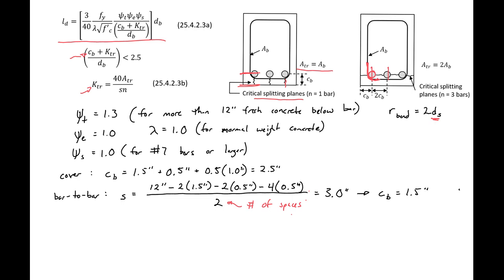CB is taken as the minimum of our cover CB and our bar-to-bar CB. The bar-to-bar CB at 1.5 inches is smaller, so this is the value we move forward with.